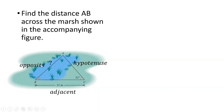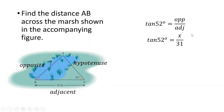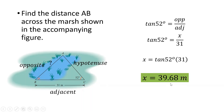We are asked to find the distance of side AB. Since we have the opposite (unknown) and the adjacent (31 meters), we use tangent: tangent 52° = opposite/adjacent = x/31. Cross-multiplying: x = tangent 52° × 31 = 39.68 meters. The distance of AB across the marsh is 39.68 meters.